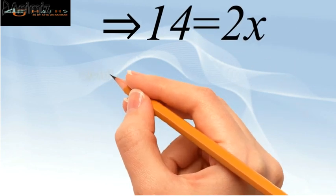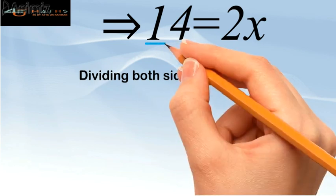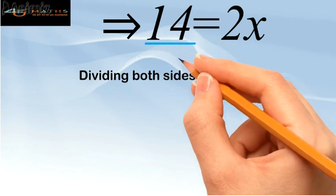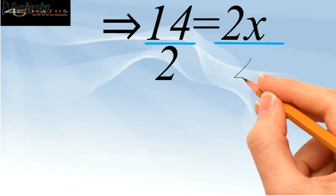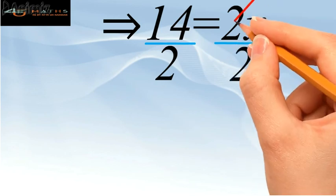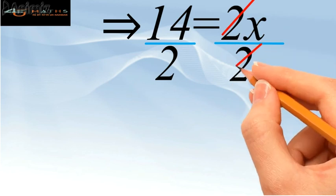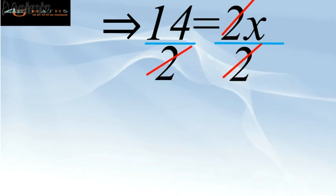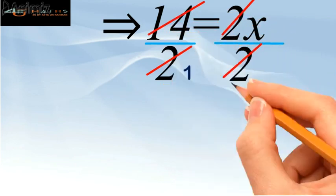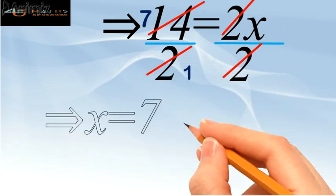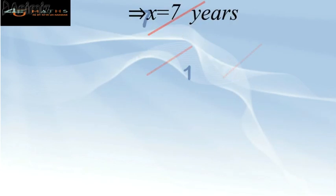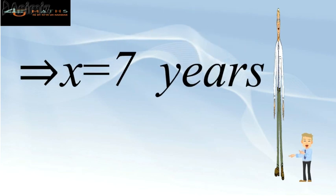Now dividing both sides of this equation by 2 to get the value of x, we have 14 upon 2 equal to 2x upon 2. In the right-hand side, 2 cancels with 2, and in the left-hand side, 14 divided by 2 gives 7. So the value of x is 7, meaning after 7 years the father will be 3 times as old as his son.